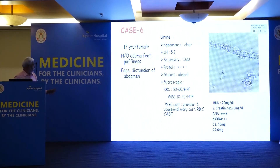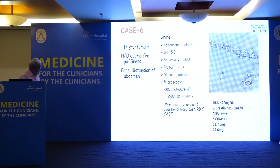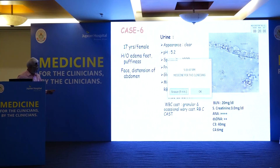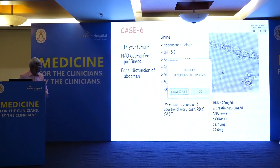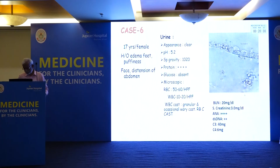A 17-year-old female presented with pitting edema, puffiness of face, and distension of abdomen — suggestive of nephrotic syndrome. Urine showed protein 4+, glucose absent, RBCs, WBCs, WBC casts, granular casts, occasional waxy casts, and RBC casts — multiple casts. This is called telescopic urinary sediment, seen on direct unstained microscopy. The presence of 2–3 or more types of casts in one sample suggests lupus nephritis, anti-GBM disease, or vasculitis.